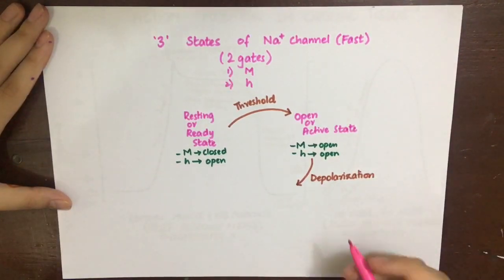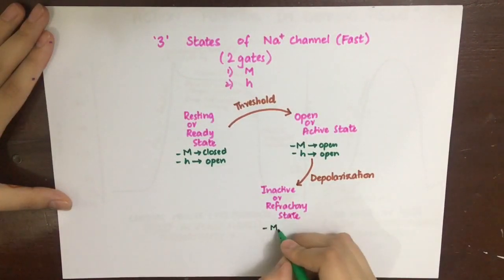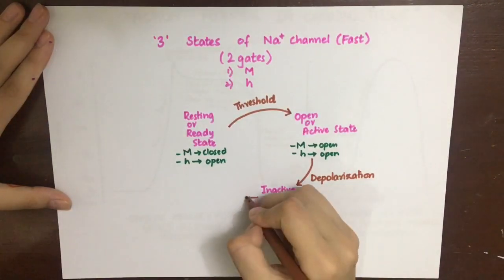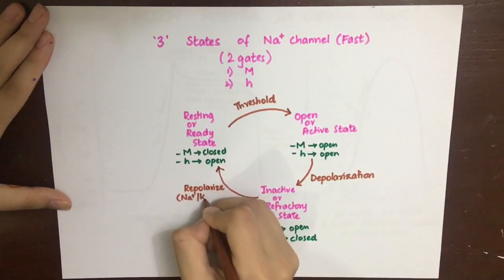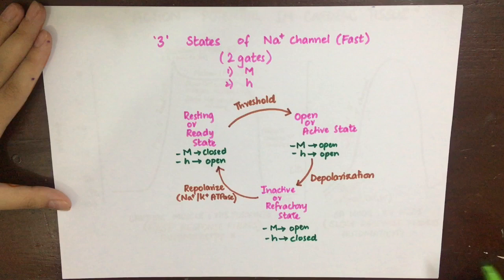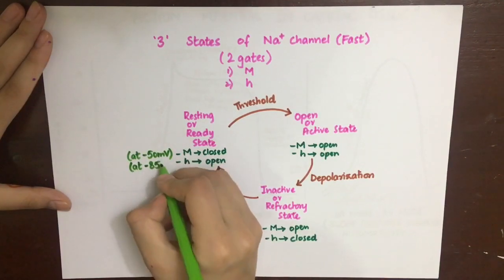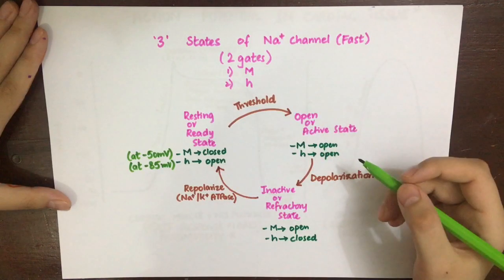After depolarization, the channel converts to the inactive or refractory state, in which the M gate is open but the H gate is closed, inactivating the channel. This channel will only return to the resting or ready state — and thus be able to fire again — after repolarization. For repolarization, we must wait for the delayed potassium exit, and also sodium-potassium ATPase, which plays a role by throwing sodium out of the cell and bringing potassium back. After repolarization, the M gate closes at about minus 50 millivolts and the H gate opens at about minus 85 millivolts, returning the channel to a state capable of undergoing depolarization again.